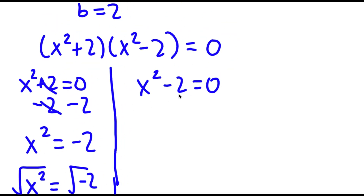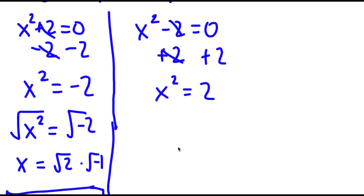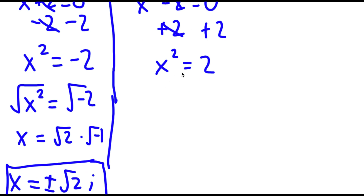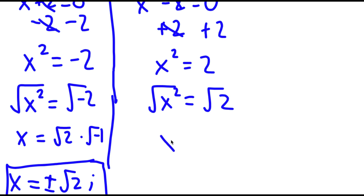For x squared minus 2 equals 0, I can simply add 2 on both sides and I get x squared is equal to positive 2. To solve this, I'm going to take the square root on both sides. The square root of x squared is x, and this is equal to positive or negative square root of 2.